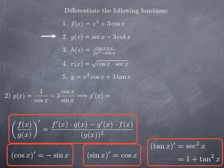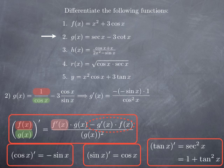To obtain g prime of x, we are going to apply the quotient rule to the first term 1 over cosine x, where 1 is the top and cosine x is the bottom. In the quotient rule, we start with the derivative of the top. In this case, the top is 1, so its derivative is 0, which means the first term in the quotient rule is 0. What remains is the second term: the opposite of the derivative of the bottom multiplied by the top. So the opposite of the derivative of cosine, which is negative sine, multiplied by the top, which is just 1. All this is over the bottom squared, in other words, cosine squared x.